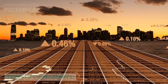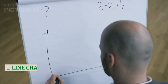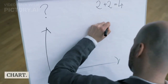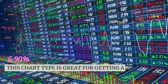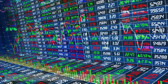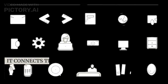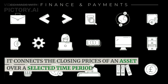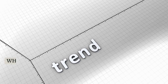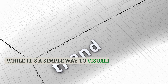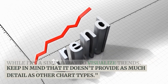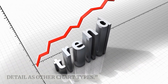Types of price charts. First up, we have the line chart. This chart type is great for getting a quick overview of an asset's overall trend. It connects the closing prices of an asset over a selected time period with a single line. While it's a simple way to visualize trends, keep in mind that it doesn't provide as much detail as other chart types.